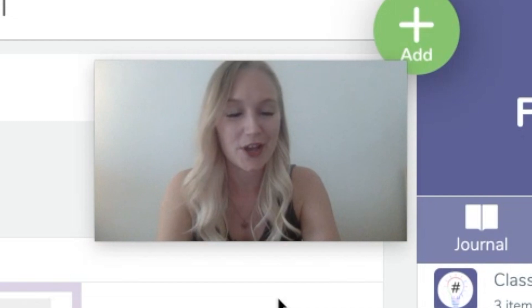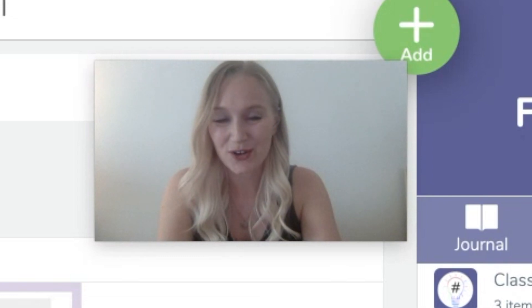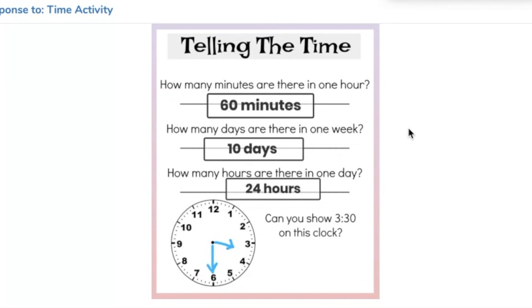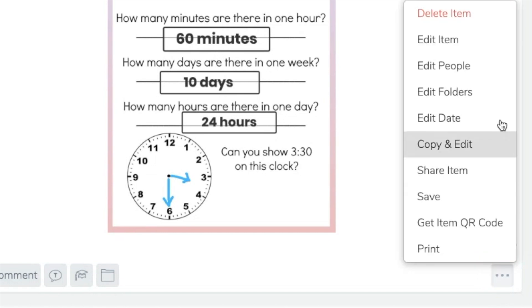Now that we've finished giving Alice some feedback on her writing, I'm going to show you a different way of giving feedback on Seesaw. We're going to have a look at Greg, my imaginary friend, who has added some information on his worksheet called 'Telling the Time.' This is an assignment I posted for the students, and Greg has responded by typing over the top of the assignment. I can tell straight away by looking at the work that Greg hasn't got all of the answers right. Did you know that on Seesaw you can actually edit and tick the work and edit over the top of what has been submitted?